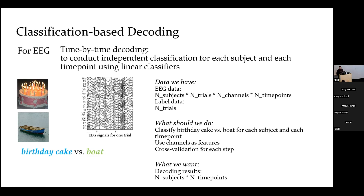Question: how much preprocessing should be done for the EEG data? Sometimes you can just do filtering and ICA to remove eye movement artifacts. Then you get the ERP signals for each trial — that's enough. This is a very standard data format. For each subject and each trial, we have the number of channels by number of time points.